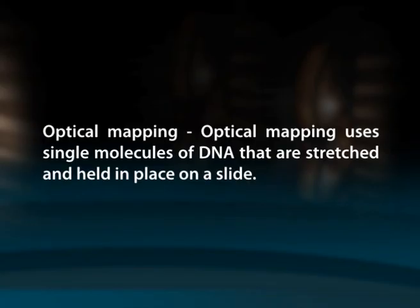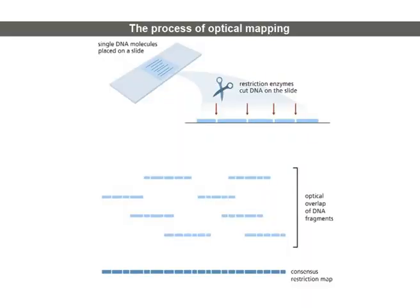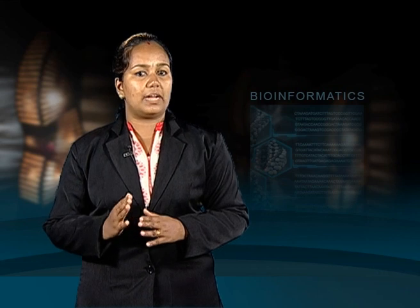Optical mapping uses single molecules of DNA that are stretched and held in place on a slide. Restriction enzymes are added to cut the DNA at specific points, leaving gaps behind. Then the DNA fragments are stained with dye and the gaps are visualized under a fluorescence microscope. The intensity of the fluorescence is used to construct an optical map of single molecules. These can then be combined and overlapped to give a global overview of the genome and aid with assembling a sequence genome.